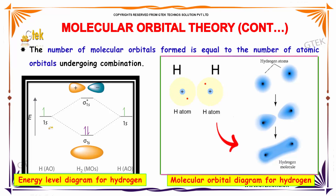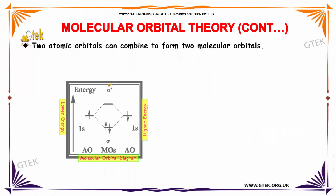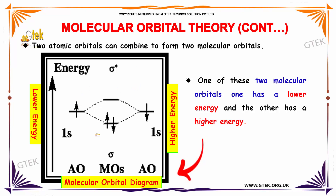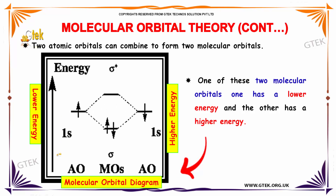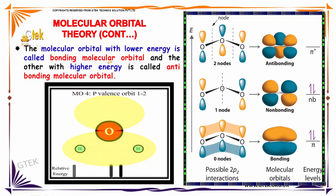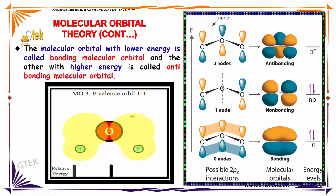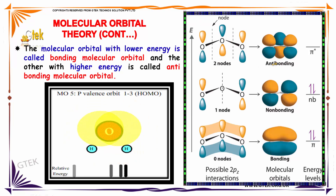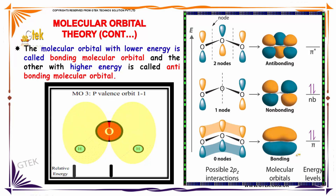Here is the energy level diagram for hydrogen and the molecular orbital diagram for hydrogen. Two atomic orbitals can combine to form two molecular orbitals. One of these two molecular orbitals has a very low energy and the other has a high energy. The molecular orbital with low energy is called the bonding molecular orbital, and the other with higher energy is called the anti-bonding molecular orbital. You are able to see the two nodes — this is your anti-bonding — and one node — this is your non-bonding — and this is your bonding.